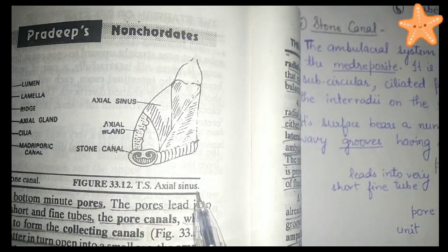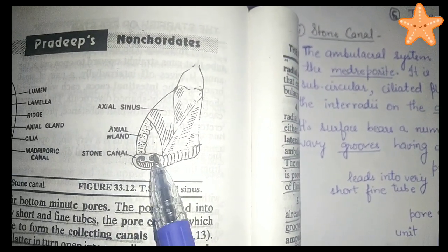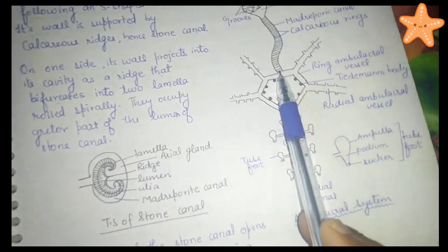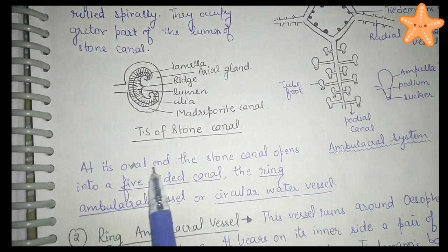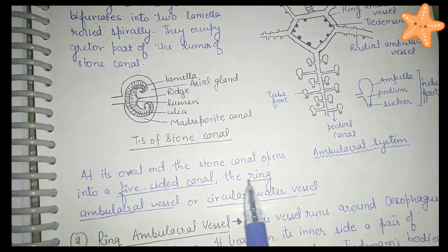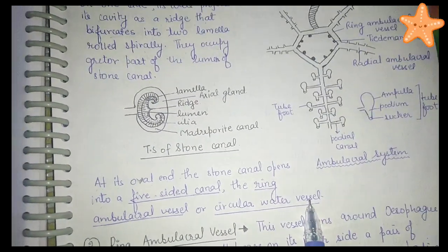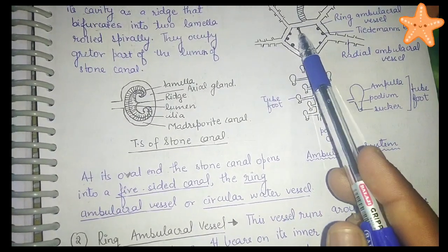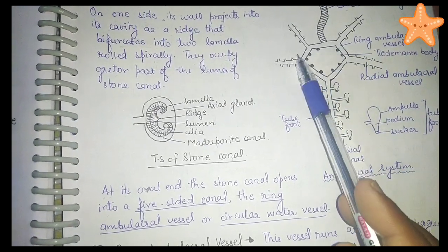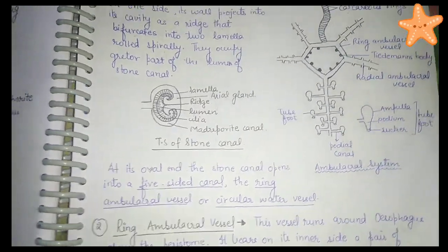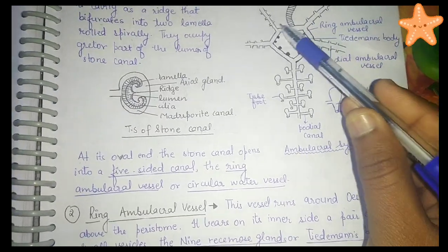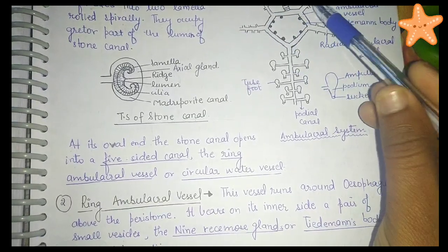Here we can also see the axial gland and axial sinuses alongside the stone canal. At its oral end, the stone canal opens into a five-sided canal called the ring ambulacral vessel, or circular water vessel. This ring ambulacral vessel is located around the esophagus, above the peristome.